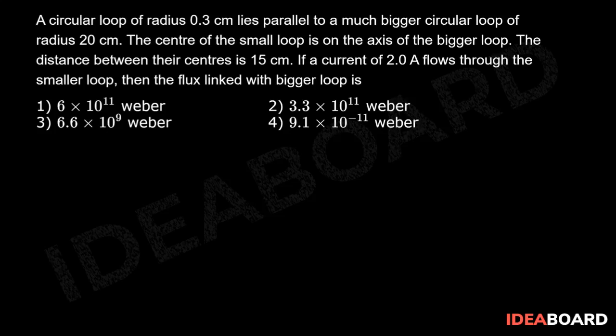You know that flux phi equals B into A. The flux linked with the bigger loop is equal to mu 0 i r squared into pi r squared divided by 2 into small r squared plus d squared whole power 3 by 2.